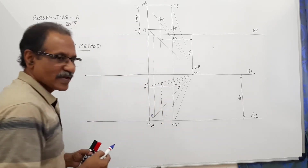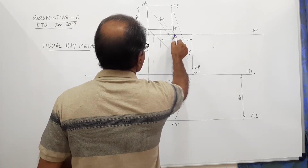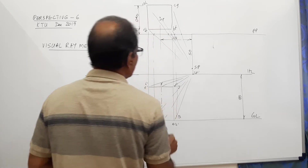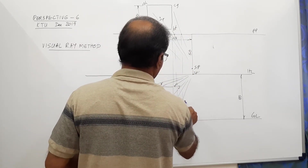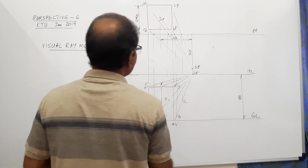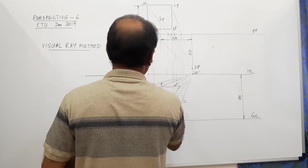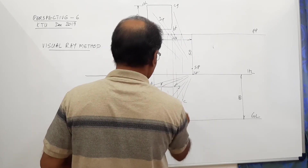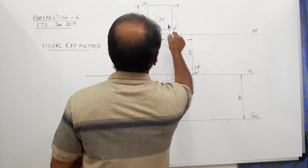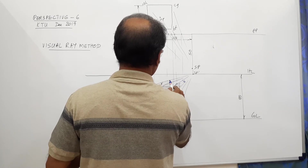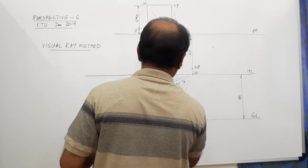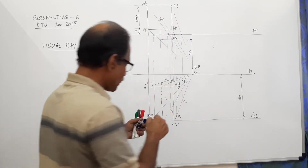Similarly, locate B: find the intercept of B on PP and drop it down to B dash of SP to get capital B. Repeat this process for points C, D, E, F, G, H, O, and P to get all the perspective points.